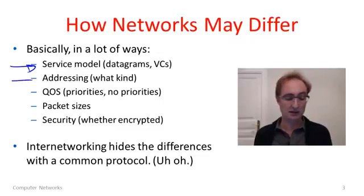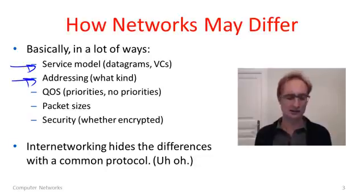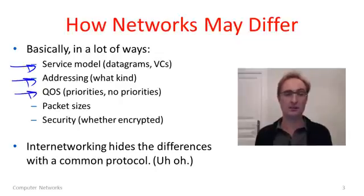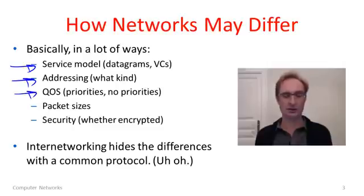Different networks might have different kinds of addressing, since they'll normally be designed by different people. So it's not clear that we can even write the different kinds of addresses in the right place in other networks. There may also be many different features in these different networks. A fairly large one, for instance, might be quality of service. Imagine if one of the networks has multiple different kinds of quality of service — maybe regular packets and priority packets — and another network doesn't. It's not clear how we would honor those quality of service arrangements when combining the networks.